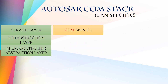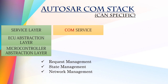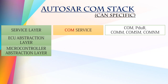The ComService Layer provides a set of communication services that are used by the application layer to send and receive data. Under the ComService Layer, we have a couple of modules which are responsible for communication request management, state, and network management. These modules include Com, which is responsible to provide a uniform access to the network, and also does the job of packing and unpacking of transmitted and received frames.